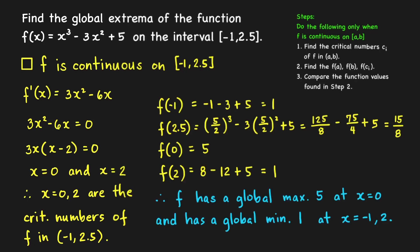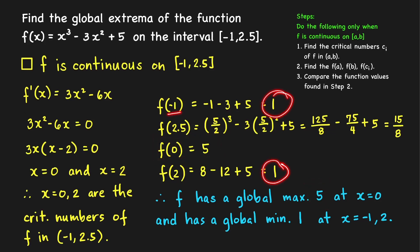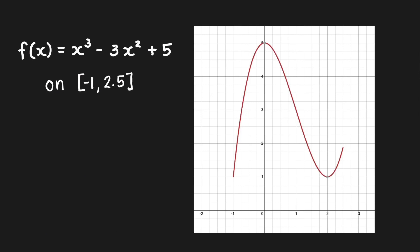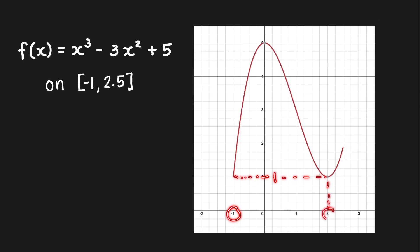Therefore, the function f has a global maximum of 5 which occurs at x = 0, and a global minimum of 1 which occurs at x = −1 and at x = 2. The graph of this function confirms that our answer is correct.